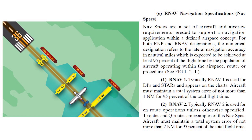En route, the lanes are four nautical miles wide, two nautical miles each side of the centerline. When flying the initial stages of an approach, or a missed approach, the defined path is two nautical miles wide, or one nautical mile each side of the centerline. Along the final approach segment, from the final approach fix to the missed approach point, the lane is just 0.3 nautical miles from the centerline to the edge, or 0.6 nautical miles wide in total.